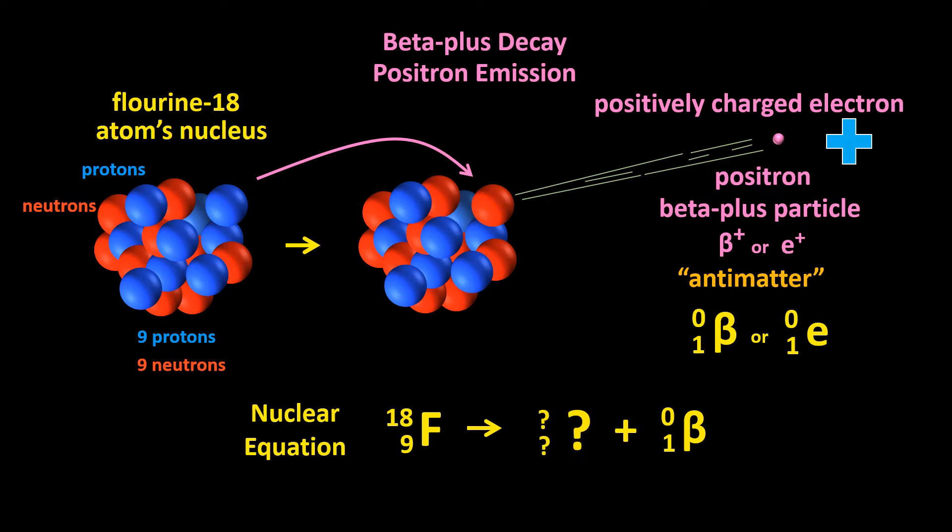Finally, let's work out what the daughter nucleus is. The daughter nucleus has one less proton than the parent nucleus, since one of the protons turned into a neutron, and so it has an atomic number of 8. This makes it the nucleus of an oxygen atom.